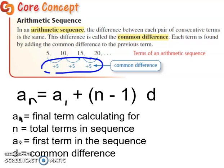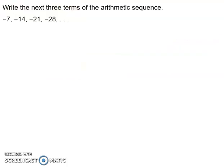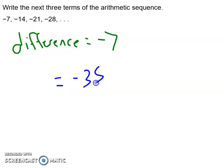So let's put this into an example. Here we go. So it says write the next three terms of the arithmetic sequence. Well, we could do that, right? We look at it, negative 7, negative 14, negative 21, negative 28. I'm seeing that my difference is negative 7. I guess I'm technically adding negative 7. Well, we're subtracting 7, but when we talk about sequences, we're always adding. So we're adding a negative 7. So our next three would just be negative 35, negative 42, and negative 49.